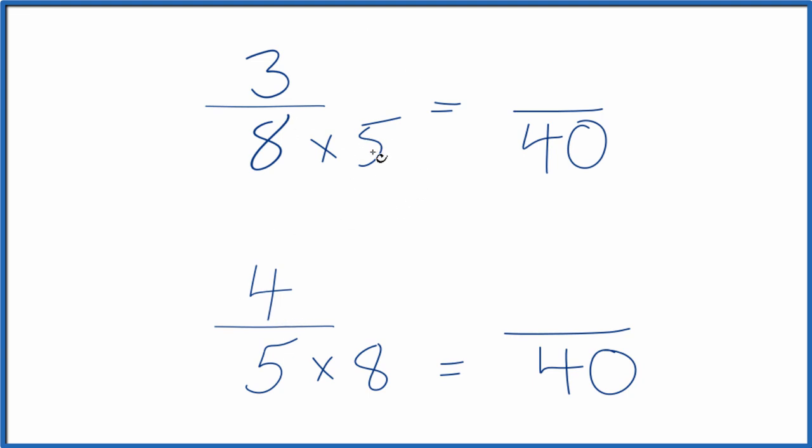So up here, since we multiplied the denominator by 5, we also have to multiply the numerator by 5. That's because 5 divided by 5 equals 1. We're just multiplying 3 eighths by 1, so we don't change the value, just the way it's represented.